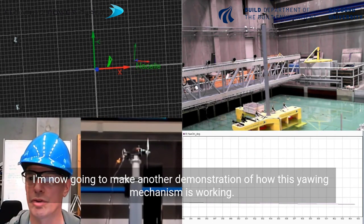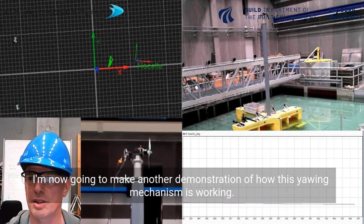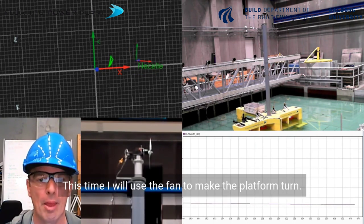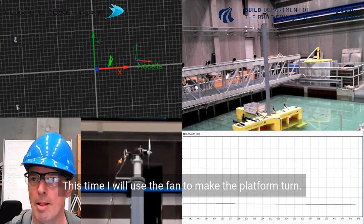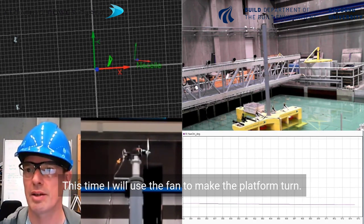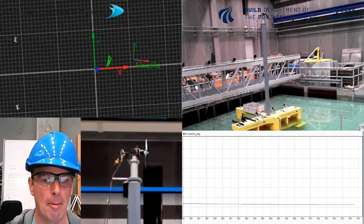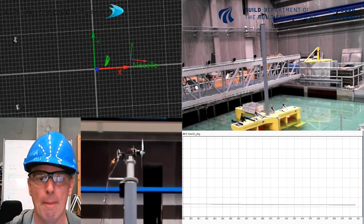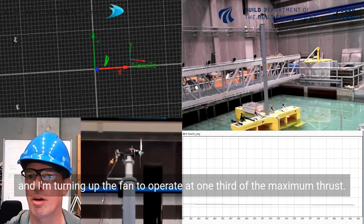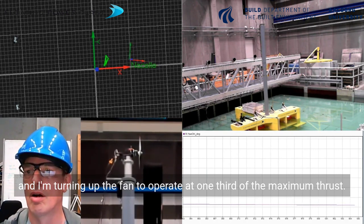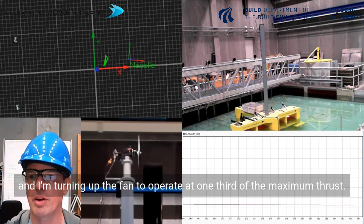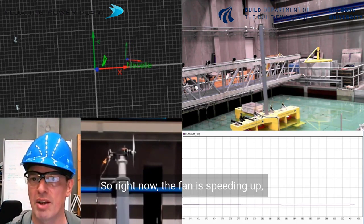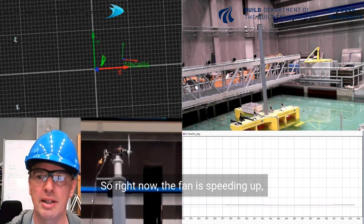I'm now going to make another demonstration of how this yaw mechanism is working. This time I will use the fan to make the platform turn. I will speed up the fan to operate at one third of the maximum thrust. The fan is speeding up.